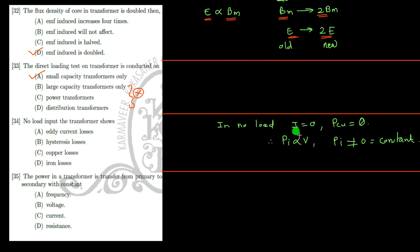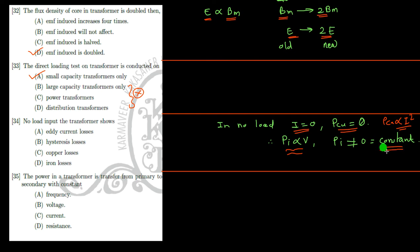No-load input of the transformer shows iron losses. Under no-load, secondary current is zero, so copper losses are zero because copper losses are proportional to the square of the current. Whatever the primary-side wattmeter shows is nothing but iron losses, since iron losses are proportional to voltage and remain constant irrespective of load current. Iron loss is the combination of eddy current and hysteresis losses.